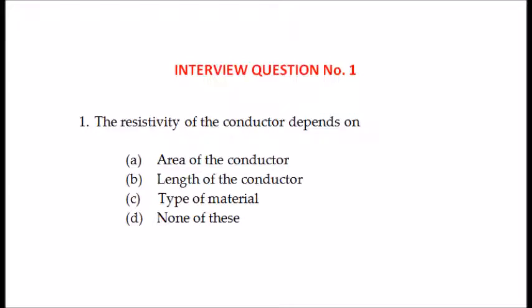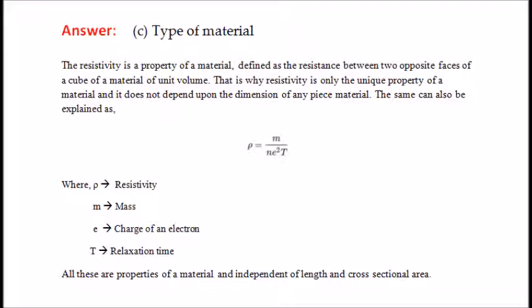First question: the resistivity of the conductor depends on — area of the conductor, length of the conductor, type of the material, or none of these? The answer is type of the material. Because resistivity is the property of a material, defined as the resistance between two opposite faces of a cube of unit volume. Resistivity is expressed as rho equals m divided by n·e²·t, where rho is the resistivity, m and e are the mass and charge of the electron, and t is the relaxation time. All these are properties of material and independent of length and cross-sectional area.